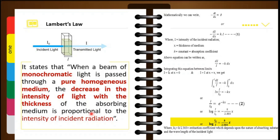Mathematically, when the light passes through this medium there occurs a decrease in the intensity of light. This decrease in intensity with the thickness (shown as L in the diagram, but consider as x) will be written as −dI/dx. So −dI/dx is proportional to the intensity of the incident light I. Removing the sign of proportionality we put a constant k: −dI/dx = k·I, where I is the intensity of the incident radiation, x is the thickness of the medium, and k is a constant called the absorption coefficient or extinction coefficient.